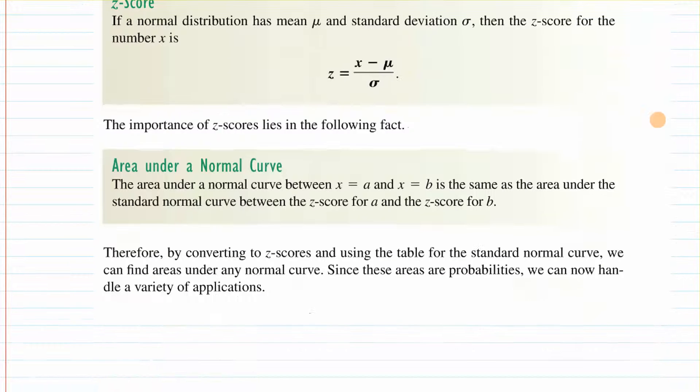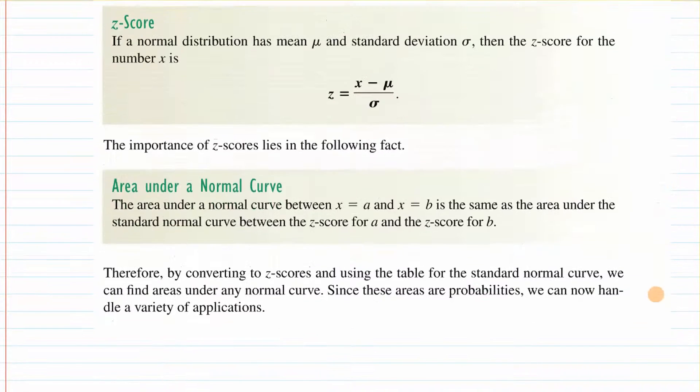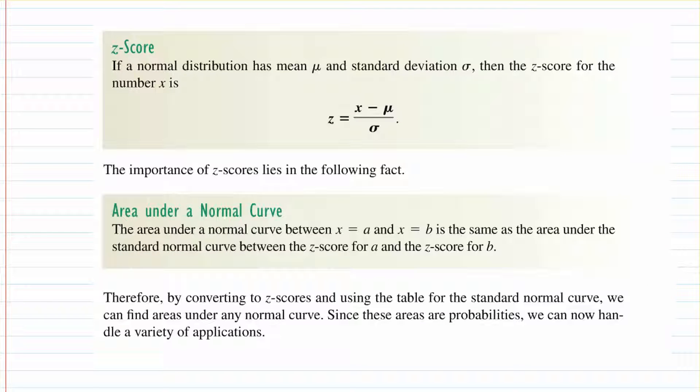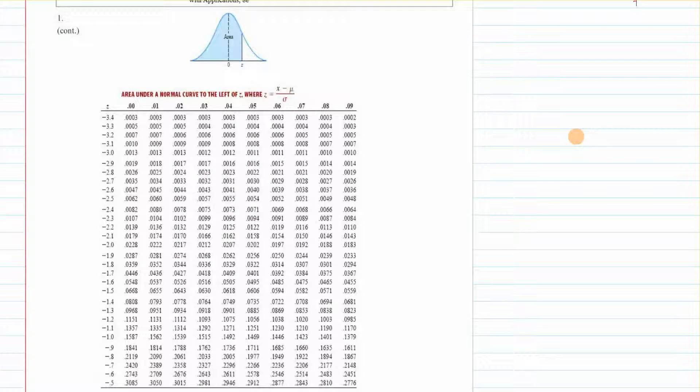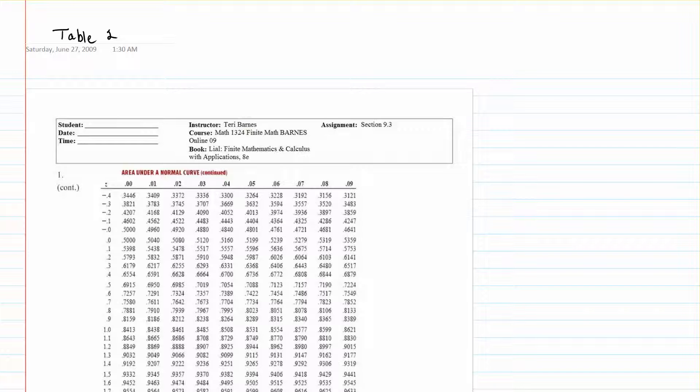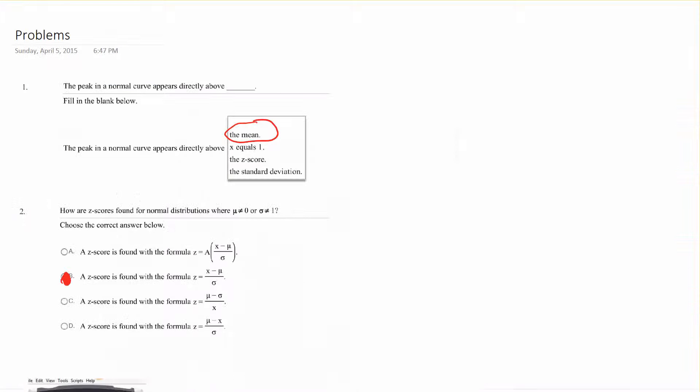If you convert the z-scores and use the table for the standard normal curve, you can find the areas under any normal curve. Since these areas are probabilities, we can handle a lot of applications. In your notes, I have a printed part of the table, and in your homework you'll be able to click a link and go straight to the tables. Those will both be here in your lecture notes.